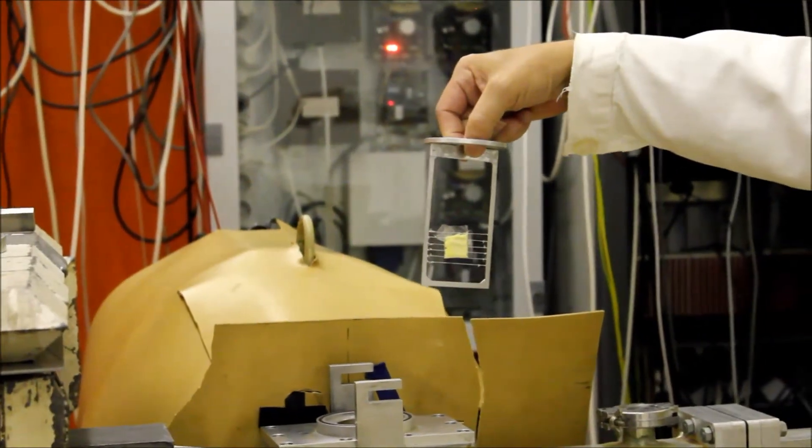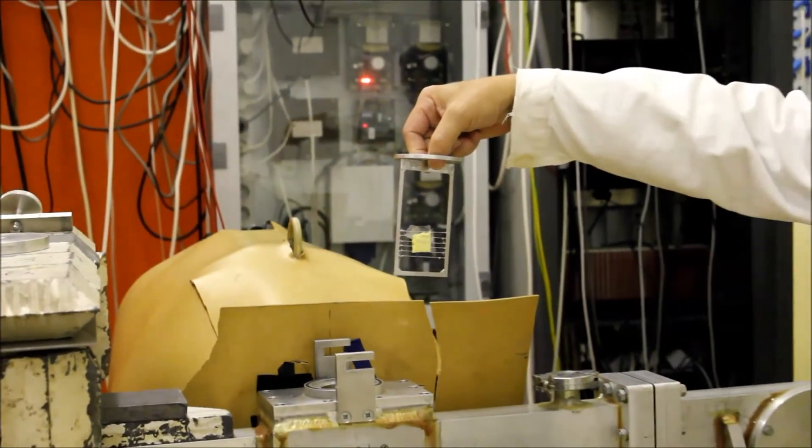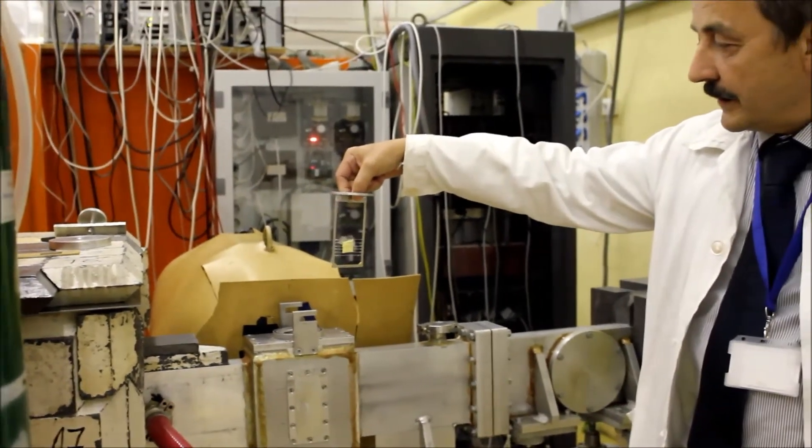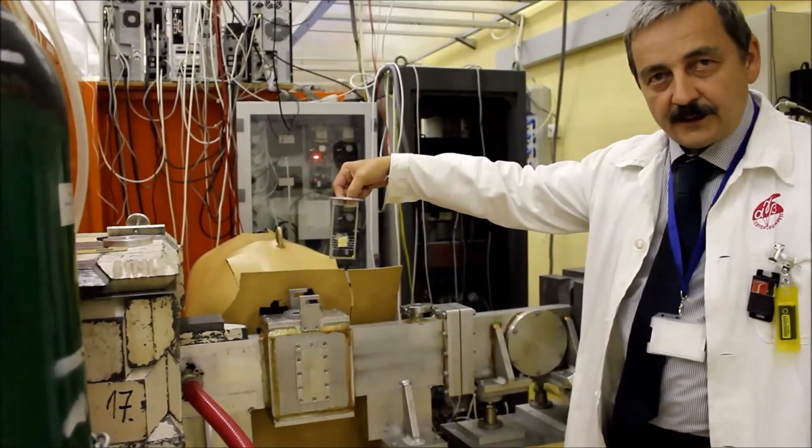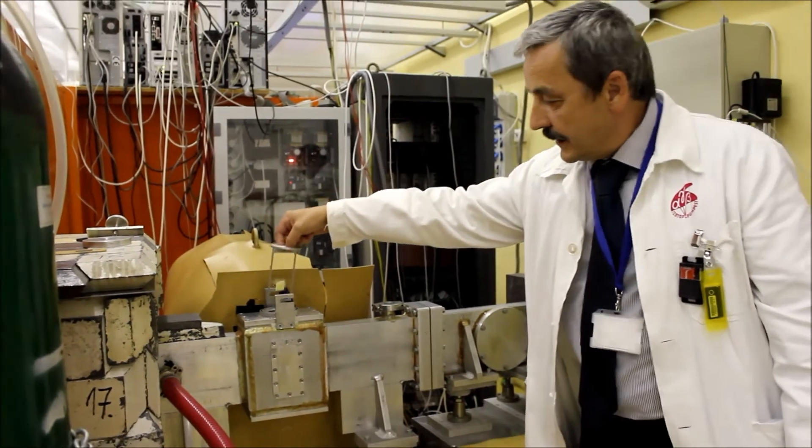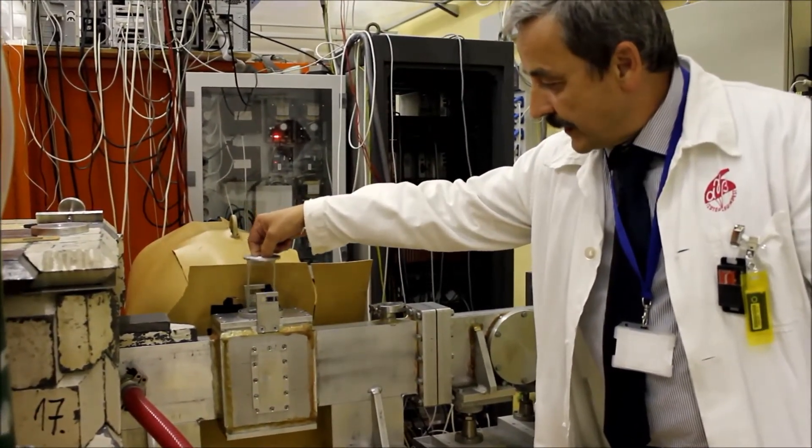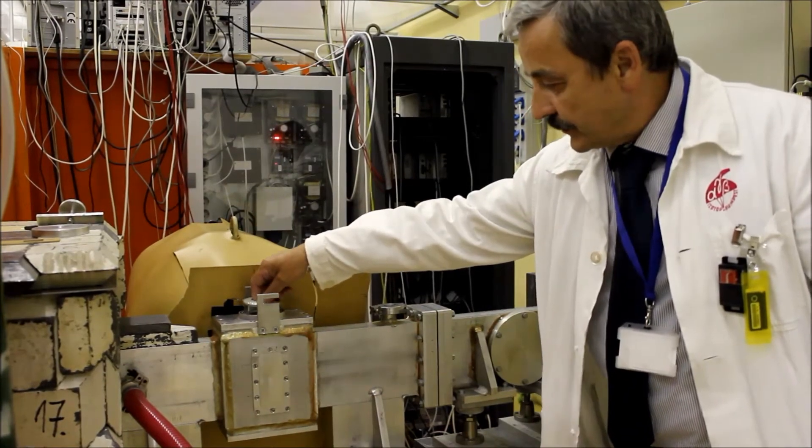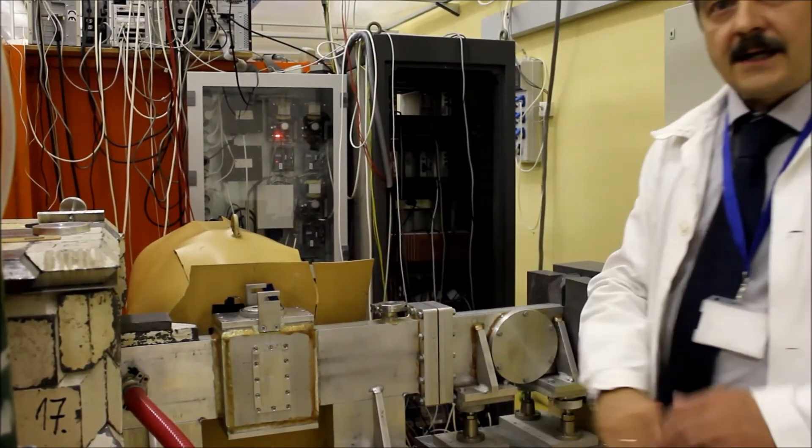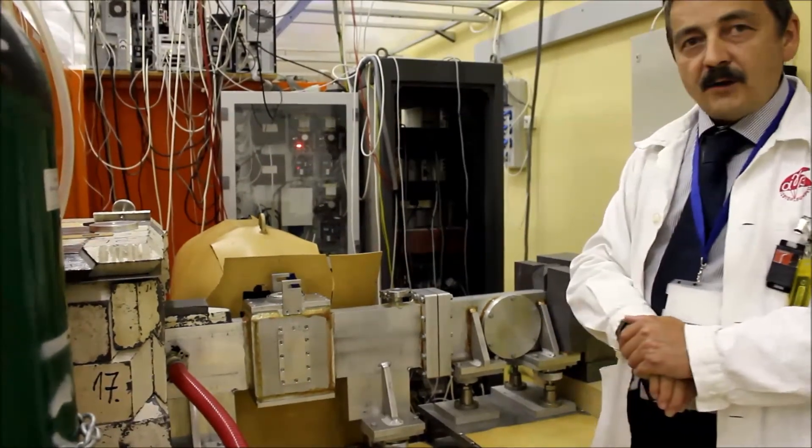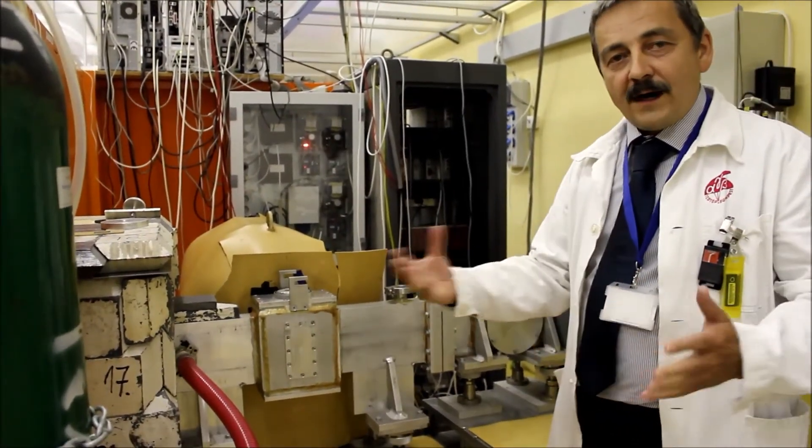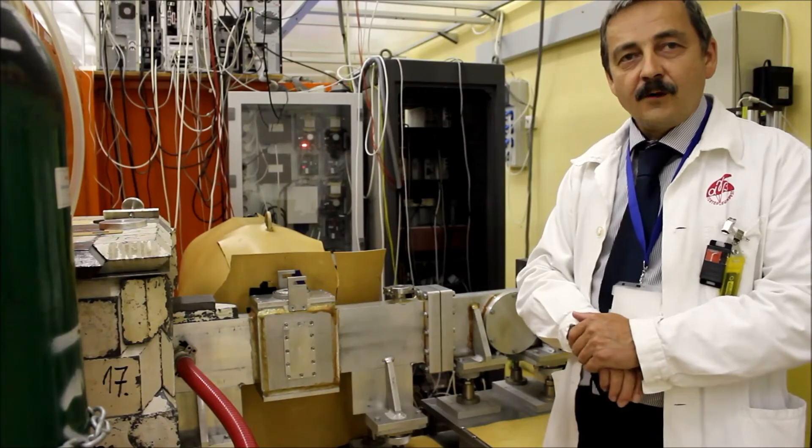And the irradiated sample nuclei get excited and release high energy gamma radiation. High energy gamma radiation are then measured by the gamma ray detection system, which is shielded against the neutrons and also against the gamma rays, and provides us the necessary information.